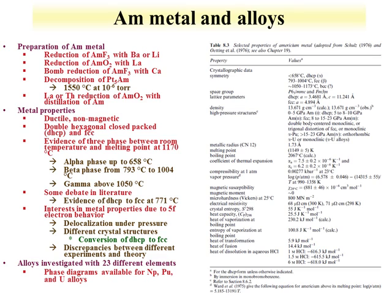The metallic properties are relatively non-magnetic and ductile, and there's a lot of interest in understanding the behavior of the metal properties due to the 5F electrons. These 5F electrons tend to delocalize under pressure, which is also the reason why we get different structures from hexagonal close pack to face-centered cubic and then body-centered cubic. There are also discrepancies between experiments and theories related to the formation of these different phases.